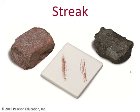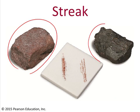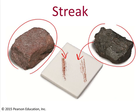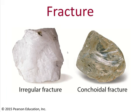One mineral that's particularly tricky, but it can be teased out with the benefit of the streak plate, is hematite. You can see here that hematite comes in both a non-metallic and a metallic form, but they both leave behind a brick-red streak on the streak plate, so you can rely on that.